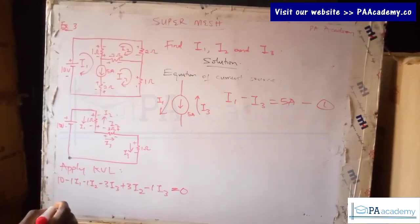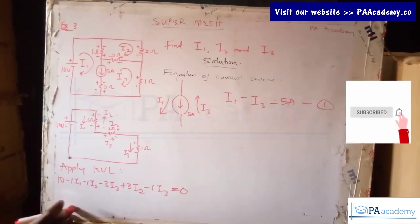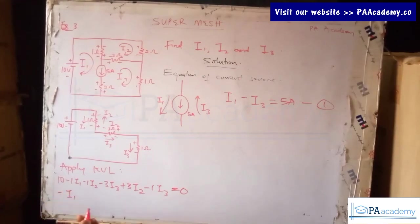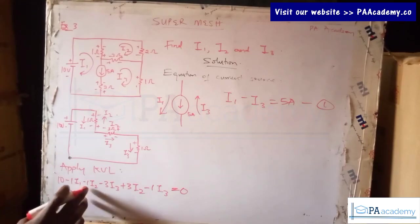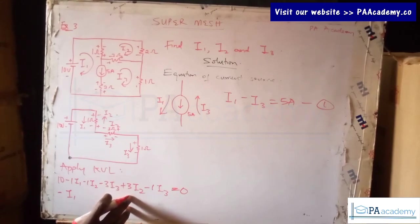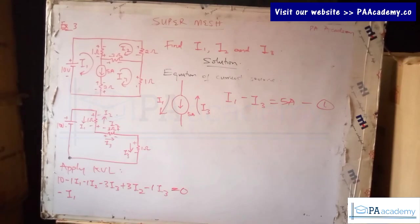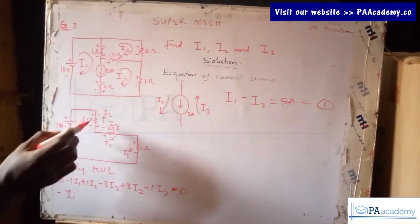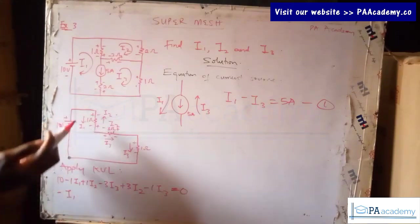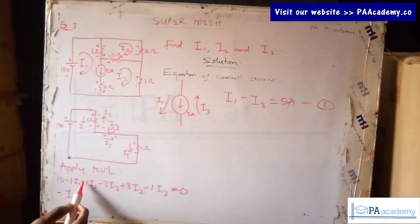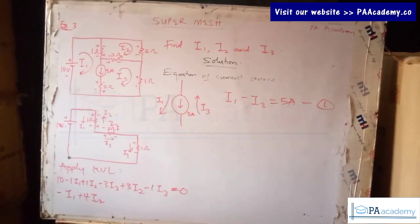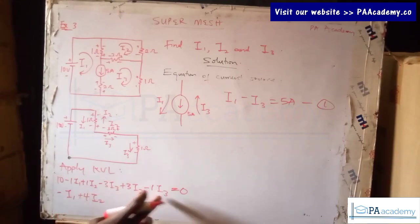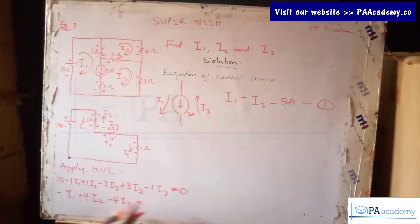Let's simplify. For i1, we have only minus one i1, which is minus i1. For i2, we have minus one i2 — but wait, that should actually be plus one i2, because we're going from negative to positive due to i2. So that's plus one i2 plus three i2, giving us plus four i2. For i3, we have minus three i3 minus one i3, giving minus four i3. Bringing 10 to the other side: minus i1 plus four i2 minus four i3 equals minus 10. This is equation two.